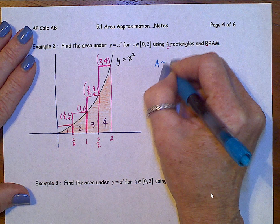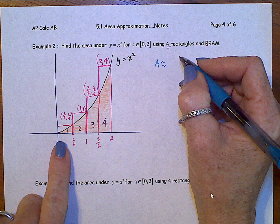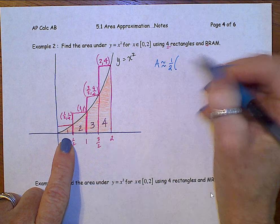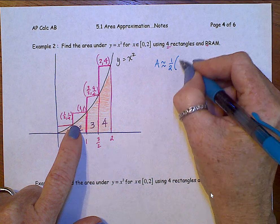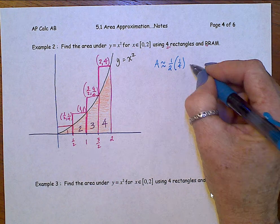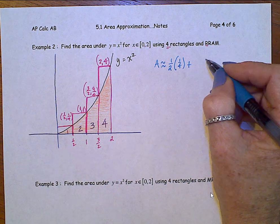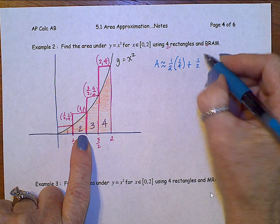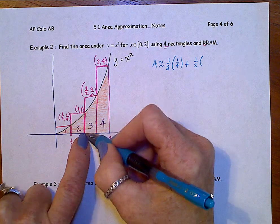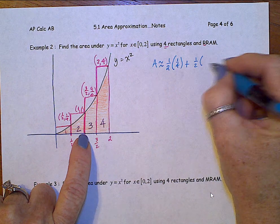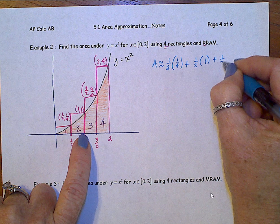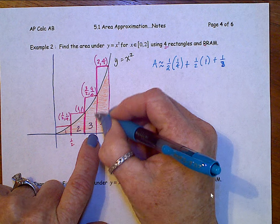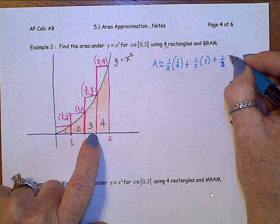Let's estimate this area. The width of the first rectangle, 1 half, times the height of the first rectangle, is 1 fourth, plus the width of the second rectangle is 1 half, times the height of the second rectangle, right side, where it hits the function, that's 1, plus third rectangle, half wide, times the height of the third, where the right side hits, that's 9 fourths.